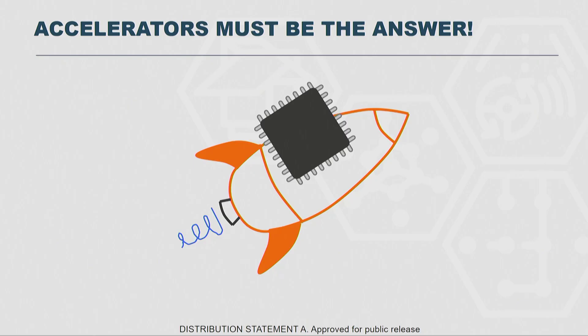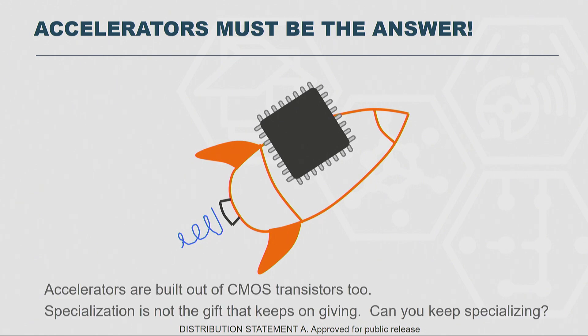We sat around and thought about this, and the first thing that came to mind is, of course, accelerators must be the answer. You take your computer chip, put some specialized accelerators on that, and that's going to solve all of our problems after the end of Moore's Law. But then we thought about it more deeply and noticed that these accelerators are built out of the exact same CMOS transistors that we build our general purpose processors, and because of that they are basically beholden to the same problems.